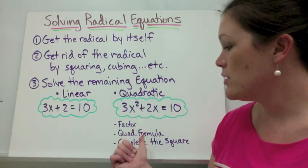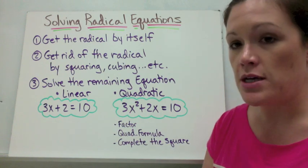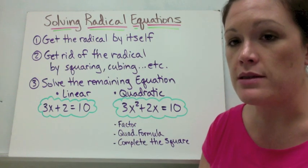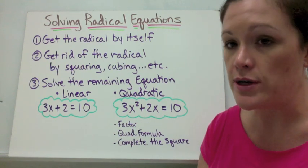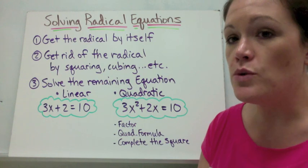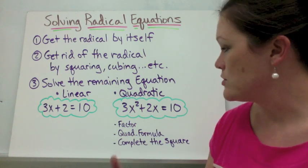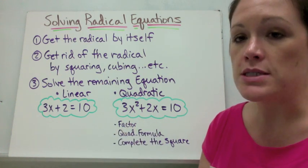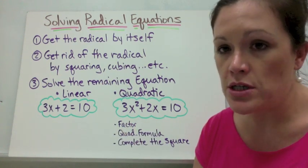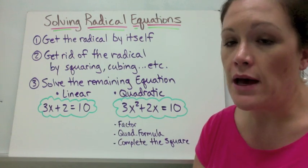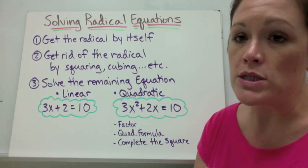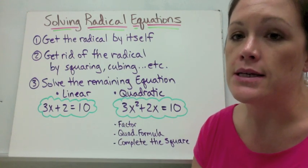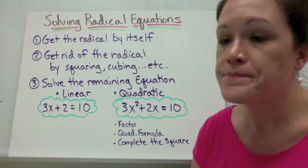So you have factoring, quadratic formula, and completing the square. Keep in mind that if as you're solving radical equations you end up with a term that's squared and a term that's not squared within your same equation, you're going to have to get everything on one side and use quadratic techniques to solve it the rest of the way.